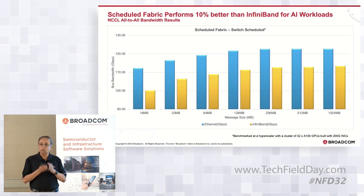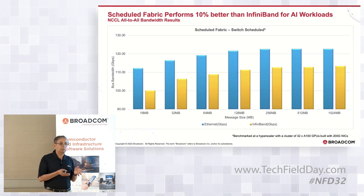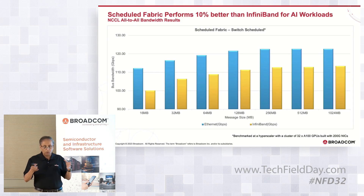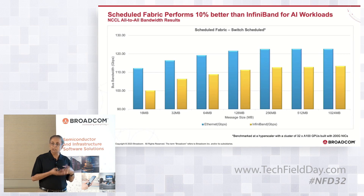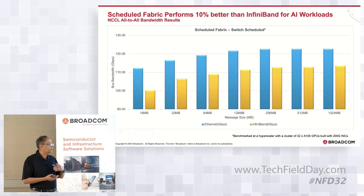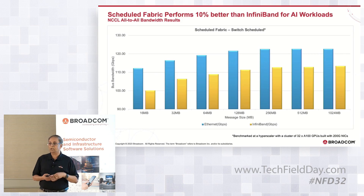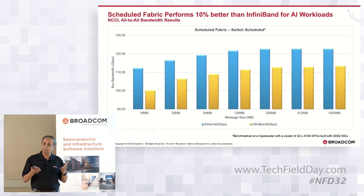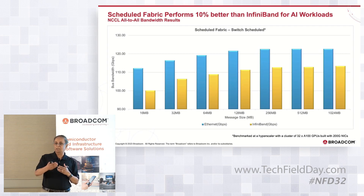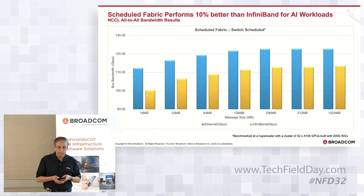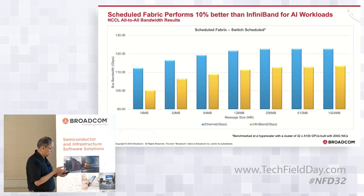You can see that for the message sizes shown, the schedule fabric performs 10% better than InfiniBand. This is a big deal — 10% better. Because if you look at the entire cost of a cluster, a significant portion is the accelerators or GPUs, and next is the optics cost. So if you can increase network performance by 10%, you can reduce the number of GPUs and optics. In some sense, by increasing performance, you're paying for the network itself — it comes out free. This was with a schedule fabric done at a hyperscaler.